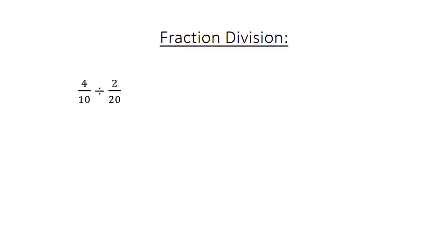Fraction division. 4 over 10 divided by 2 over 20. You replace the division sign with a multiplication sign and invert the last fraction. 4 times 20 equals 80. 10 times 2 equals 20. Simplify: the answer is 4.